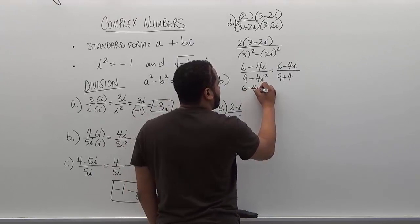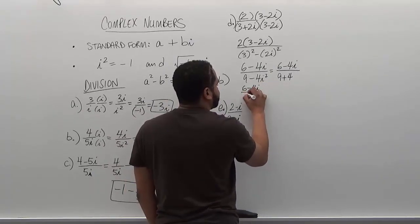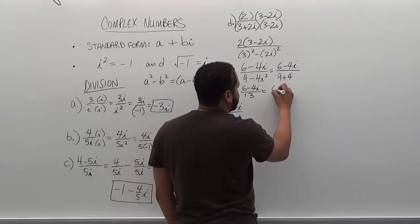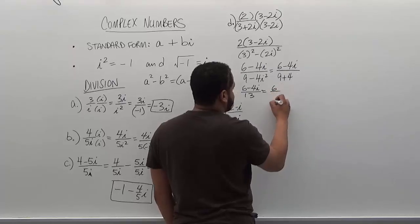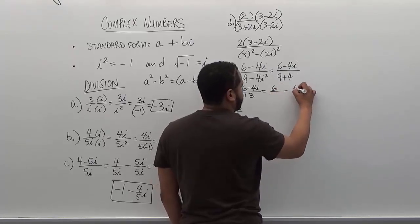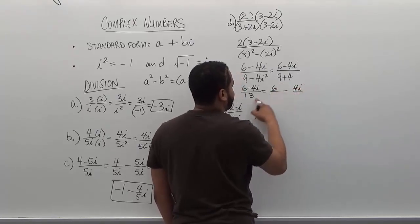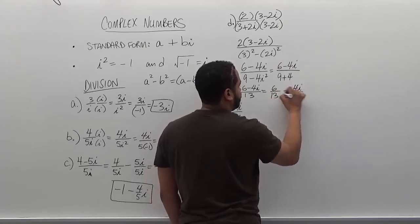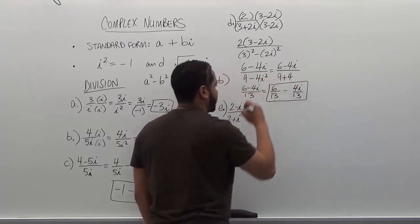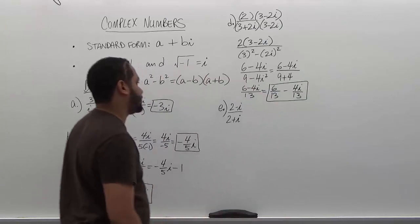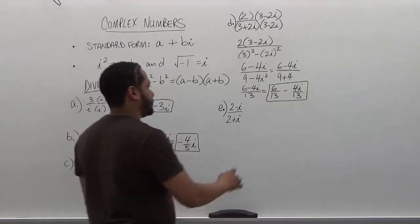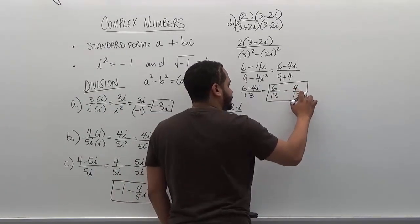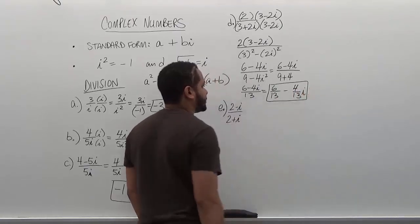So we have six minus 4i over 13. Now we just split the fractions into two, giving each the denominator's value. We separate the six from the 4i and give each the denominator 13. So we have six over thirteen minus four over thirteen i. And there we have it in complex form — the real number first, the complex number second.